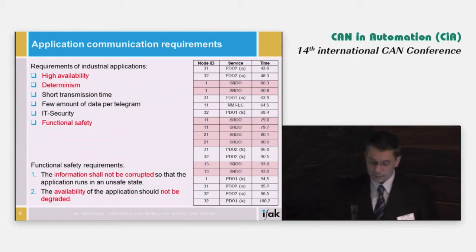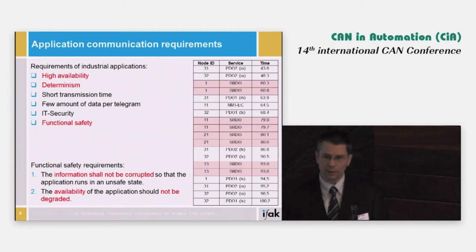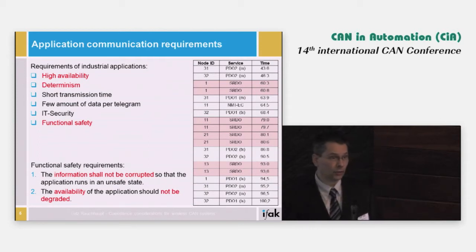The task was to interconnect different CAN networks wirelessly. Applications in industrial automation are characterized by high availability and deterministic communication. Especially with crane applications, the communication design also has to address functional safety. When talking about functional safety, there are two main aspects: first, you don't want to have corrupted information, and second, you don't want to degrade the availability of your system.